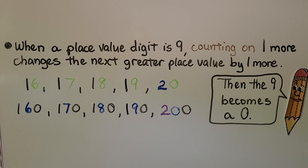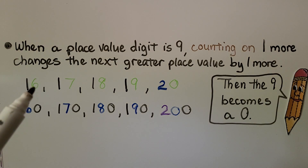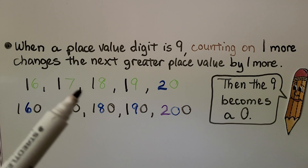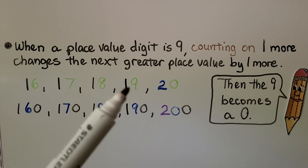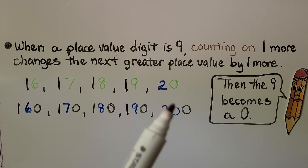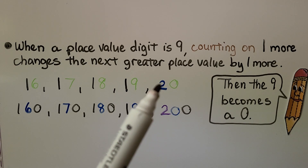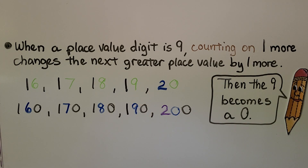When a place value digit is 9, counting on one more changes the next greater place value by one more. We have 16, 17, 18, 19 — and look, the next number is 20. We now have a 0 in the 1s place and the 10s place is one more: we had one 10, now we have two 10s. That 9 becomes a 0 for the next number.